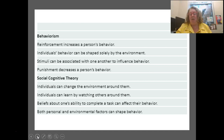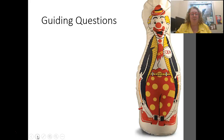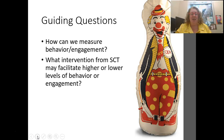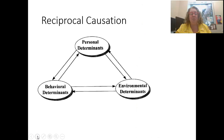That's a brief overview of the differences between behaviorism and social cognitive theory. Remember the Bobo doll from Bandura's experiment. The questions for this lecture are: how do we measure behavior, and what interventions might facilitate levels of behavior and engagement? That brings us to the reciprocal causation model.